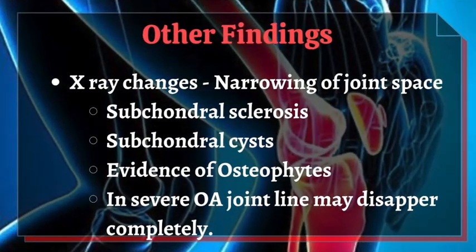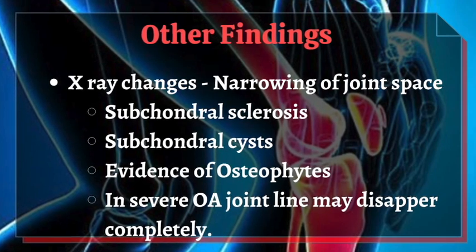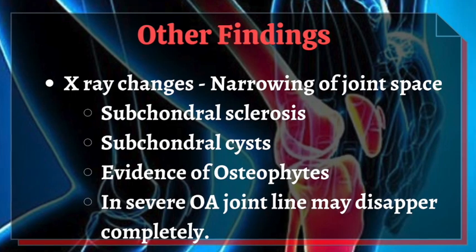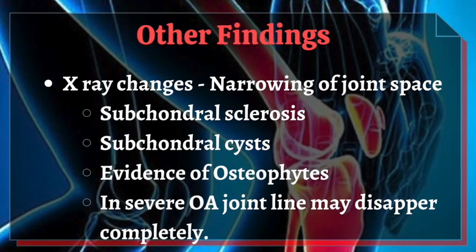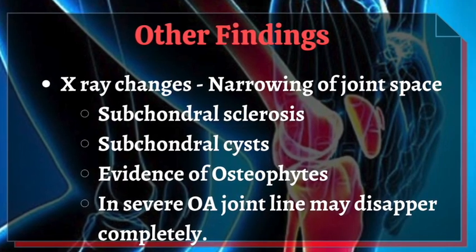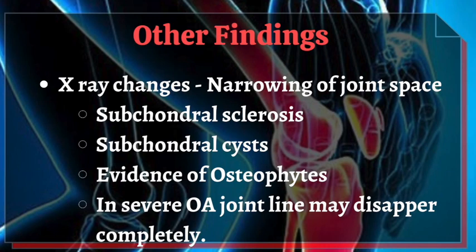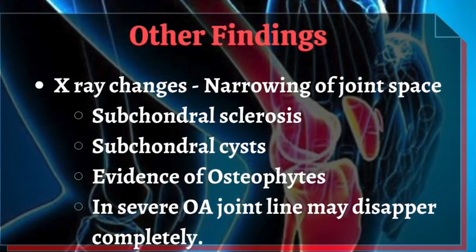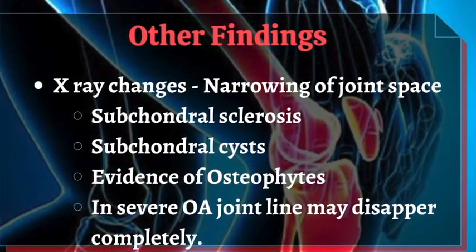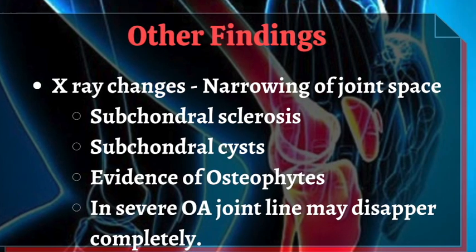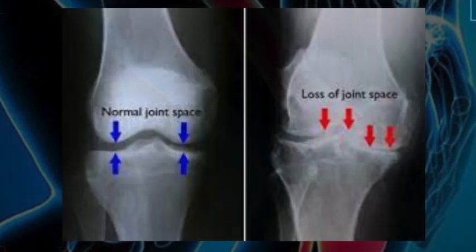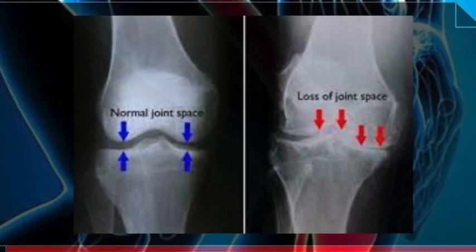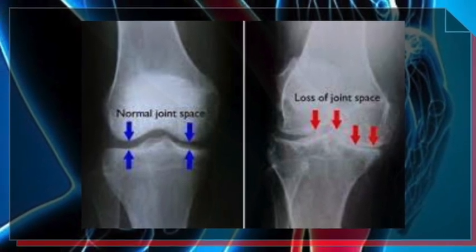Other findings involve X-ray changes. The X-ray might show narrowing of joint space, subchondral sclerosis, subchondral cysts, evidence of osteophytes, and in severe osteoarthritis the joint line may disappear completely. This X-ray picture shows all the changes of osteoarthritis of the knee joint.